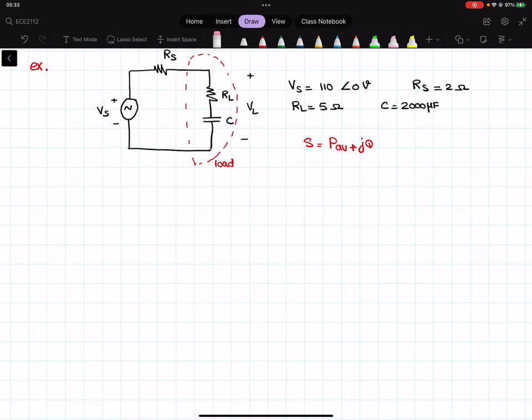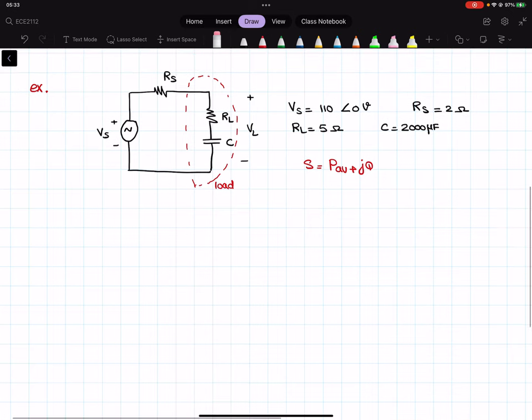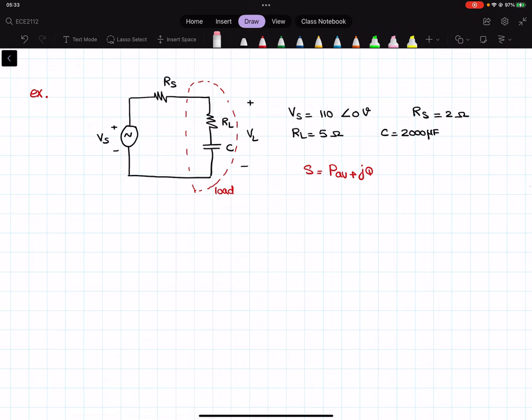Alright, let's do the second problem for the review for the final exam. In this question, we have Vs as the input to our circuit, an AC voltage of 110 volts at angle zero. Then we have R, L, and C. The series of R, L, and C is our load.